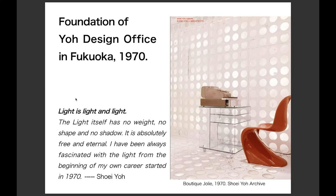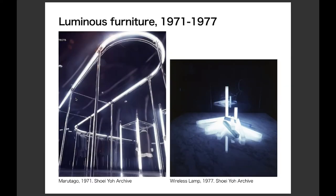The key motif of his early works is light as a natural phenomenon. He designed a series of projects called luminous furniture. In this project, the effect of light is as if gravity does not exist. From light, Yo became interested in gravity, and in the late 1970s, he started to design more architectural projects. In these projects, he pursued light and gravity as well.